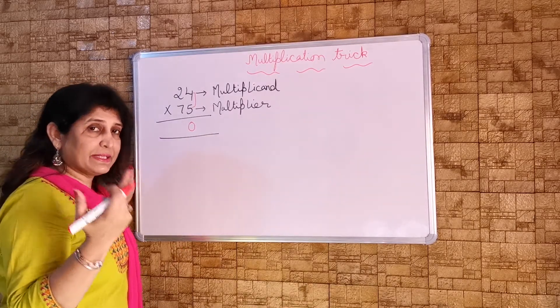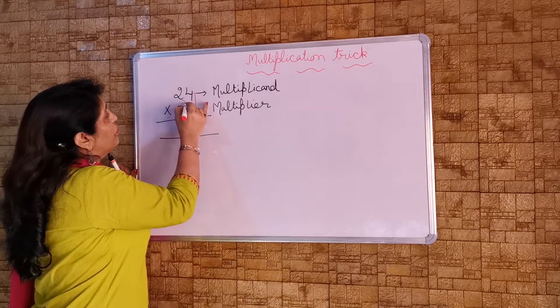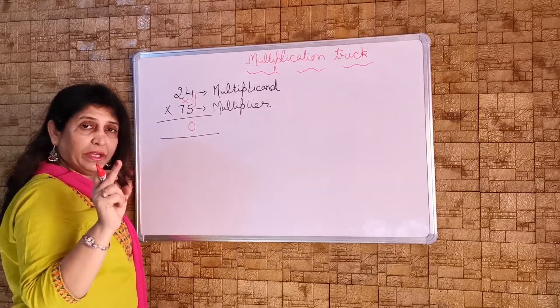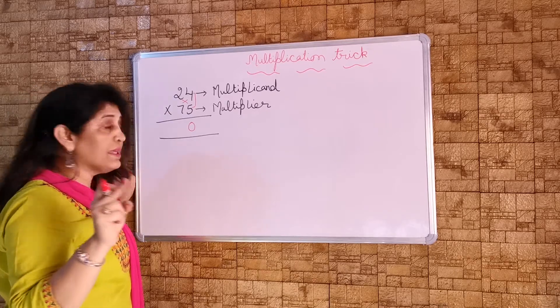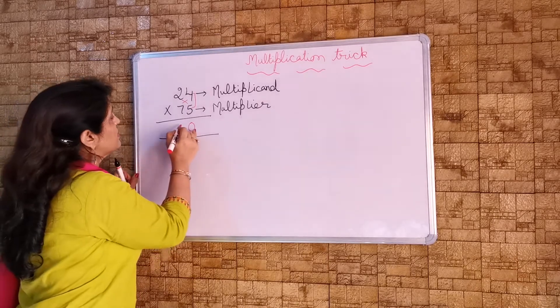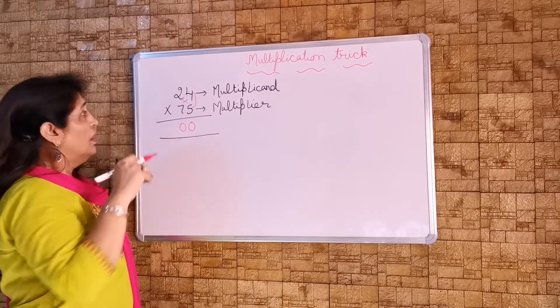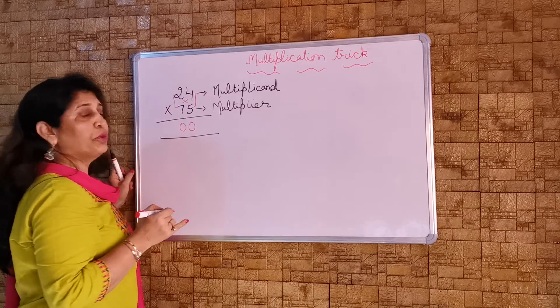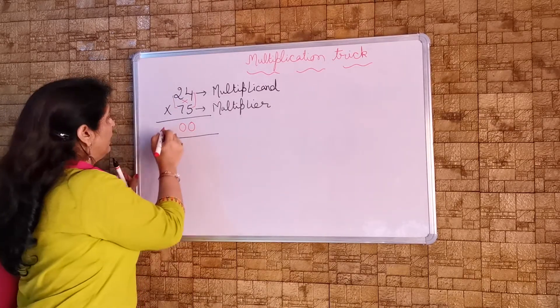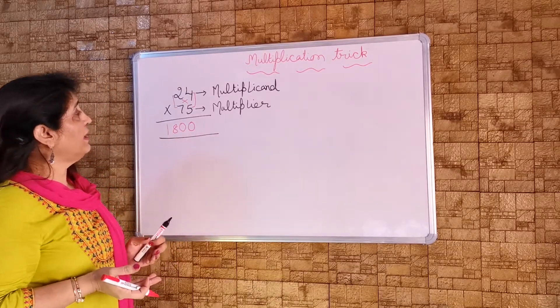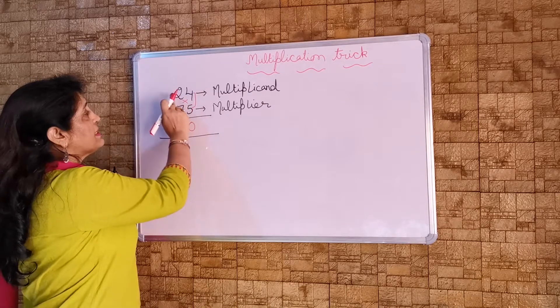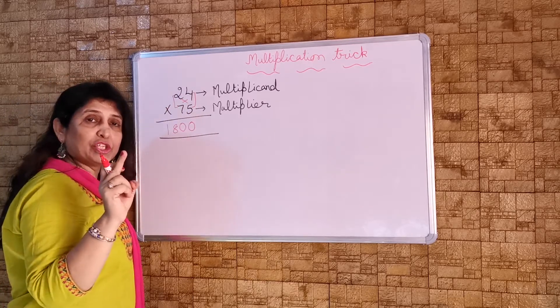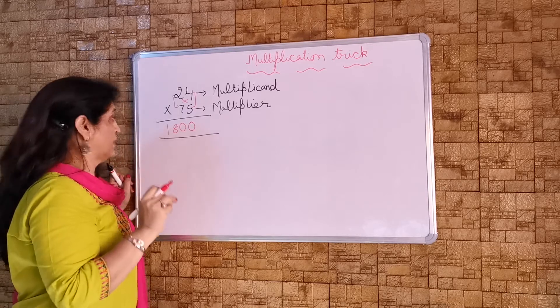2 goes into our mind as carry forward. Now we will put the cross like we do in the cross multiplication. 2 times 5 is 10 and 4 times 7 is 28. 28 plus 10 is 38 and 2 in the mind we will add up to it becomes 40. Now 4 goes as carry forward. And now these 2 digits are to be multiplied: 2 times 7 is 14 plus 4 is 18. Here what I have done? I have picked up these 2 digits as simple multiplication. And here I put the cross multiplication sign and add up those numbers which I got as product.